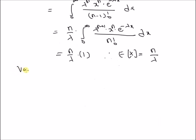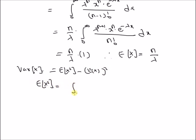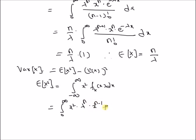Next we want to find the variance of this Erlang random variable. Variance is defined as E[X²] − (E[X])². The second moment E[X²] is defined by the integral from minus infinity to plus infinity of x² · f(x) dx, which becomes the integral from 0 to infinity of x² · λⁿ · xⁿ⁻¹ · e^(−λx) / (n−1)! dx.